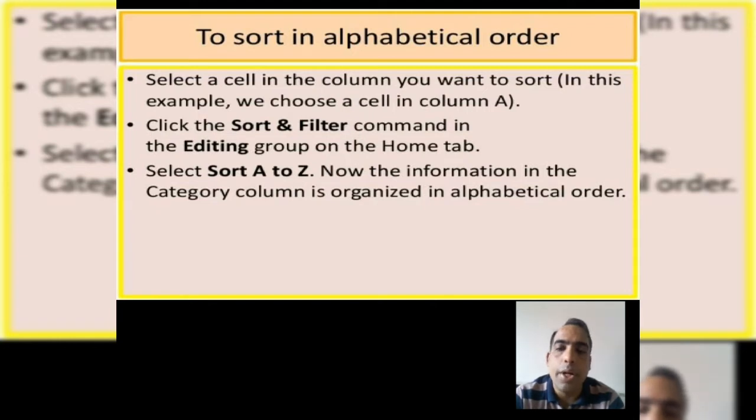Third step, select sort A to Z. Now the information in the category column is organized in alphabetical order.